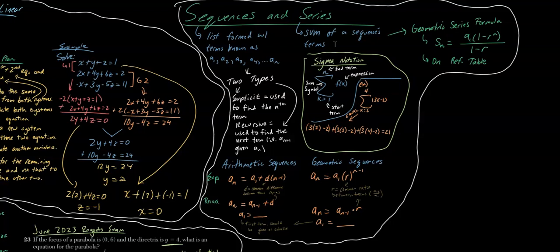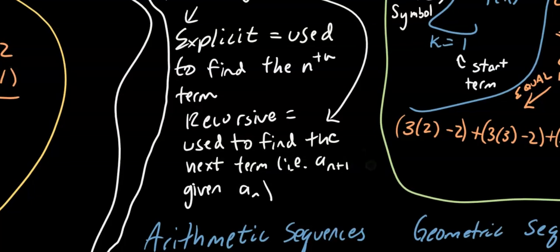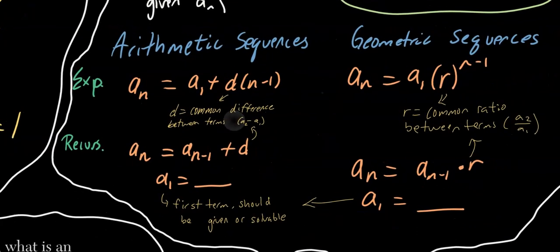There are two types of sequence equations: explicit and recursive. The explicit form is used to find the nth term, while the recursive form is used to find the next term. Here is a table of the equations for both types. Note that d is the common difference and r is the common ratio. Pause the video to write these down — they are not on your reference table.